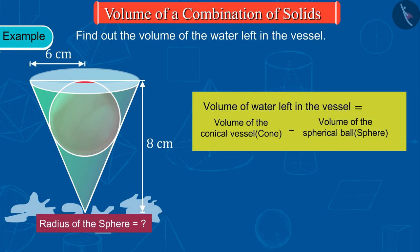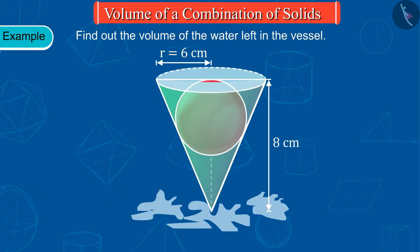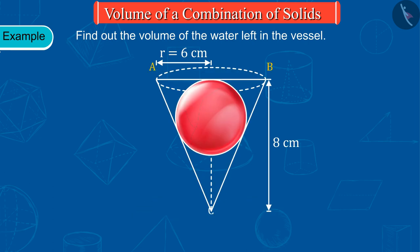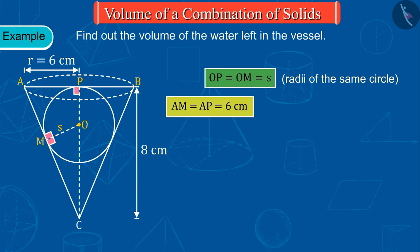Let the radius of sphere be S. Let's now draw a figure for a given situation, in which we represent the cone by triangle and sphere by circle, where the values of OP and OM are equal since they are the radii of the same circle. Also AM and AP will be equal. Can you tell why?